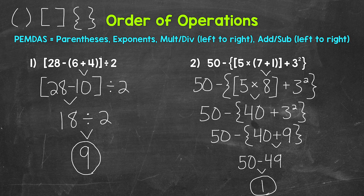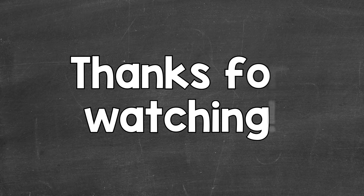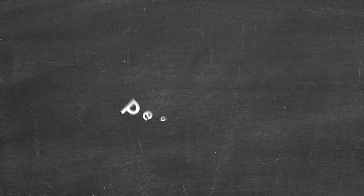Final answer: 1. There's how to work through order of operations problems involving multiple grouping symbols — parentheses, brackets, and braces. Just remember, start with the innermost group and work from there. I hope that helped. Thanks so much for watching. Until next time, peace.